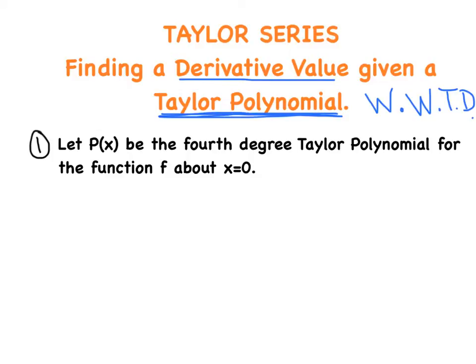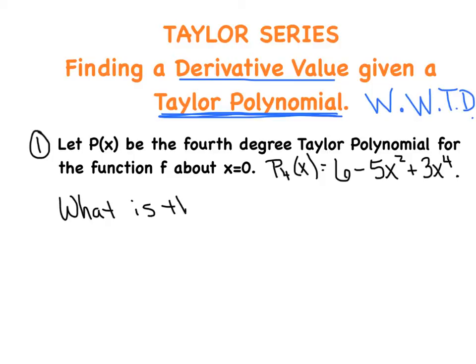Let P of X be the fourth degree Taylor polynomial for a function F centered around X equals zero — P sub 4 of X. The polynomial I'm going to throw at you is 6 minus 5X squared plus 3X to the fourth. They've already built this Taylor polynomial from scratch. We don't know who F is, but they took four derivatives of F, evaluated all four at zero, plugged them into the Taylor series, and this is what they came up with. My question: what is the value of the fourth derivative of F at zero?